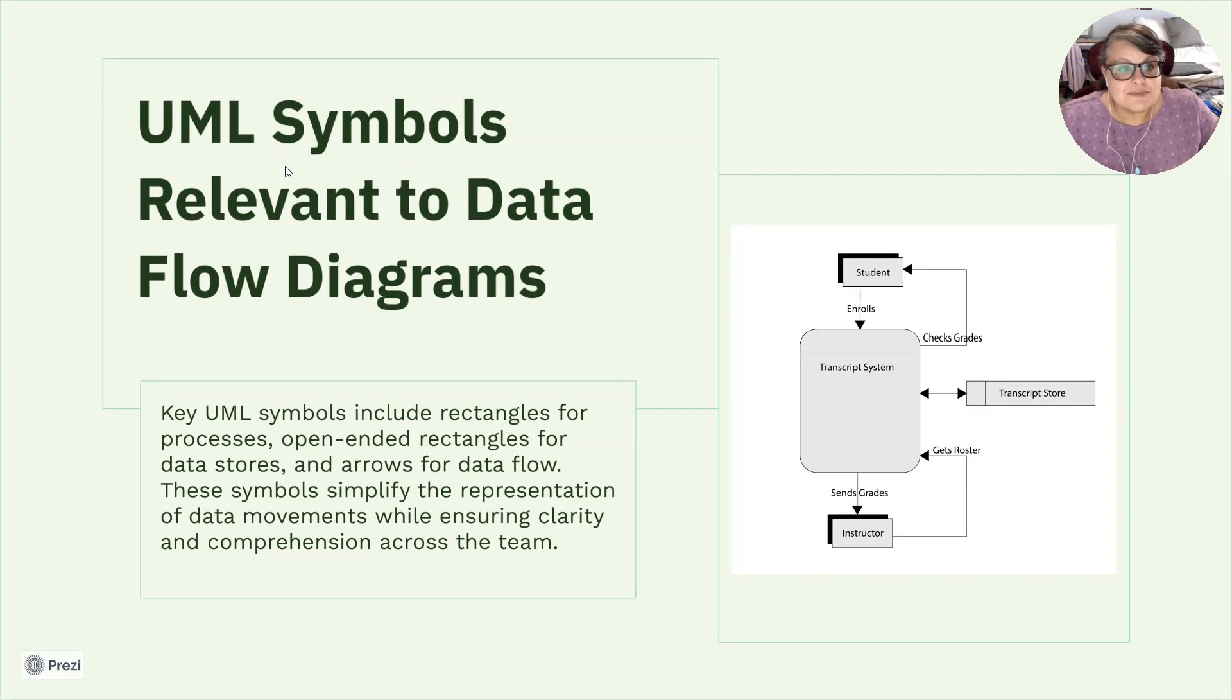UML symbols relevant to data flow diagrams. Key UML symbols include rectangles for processes, open-ended rectangles for data stores and arrows for data flow. We just saw these in the breakdown of the DFDs. These symbols simplify the representation of data movements while ensuring clarity and comprehension across the team.